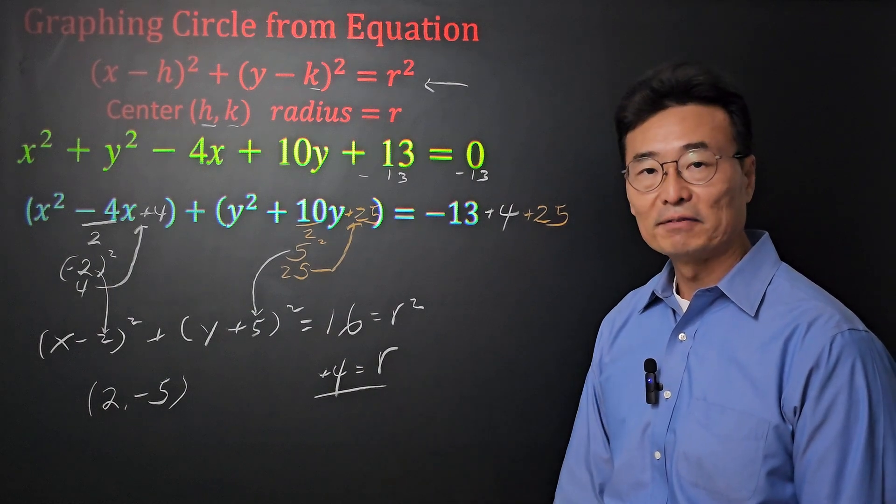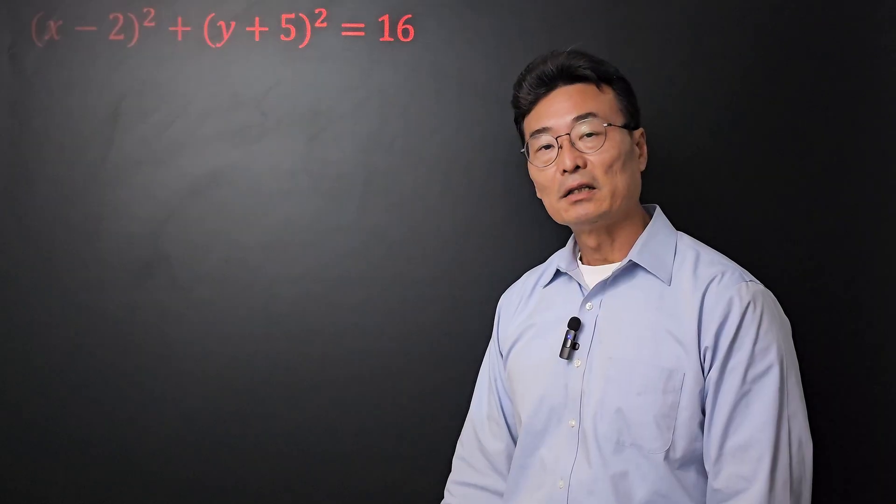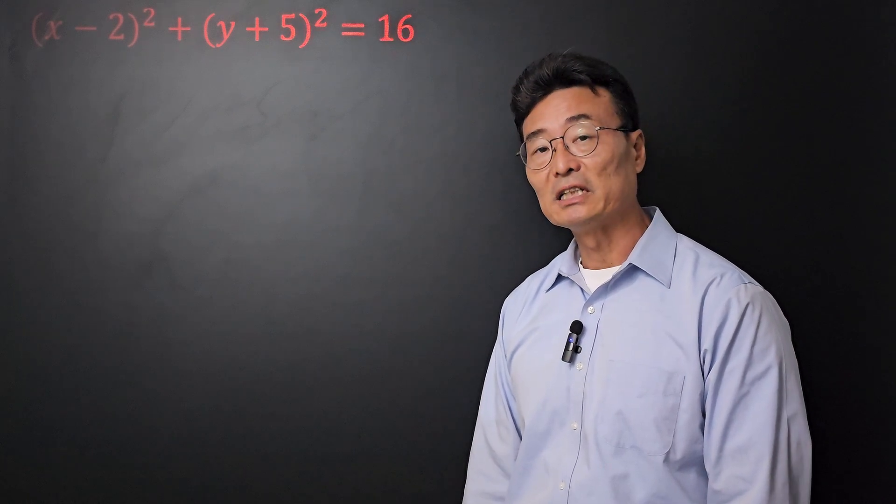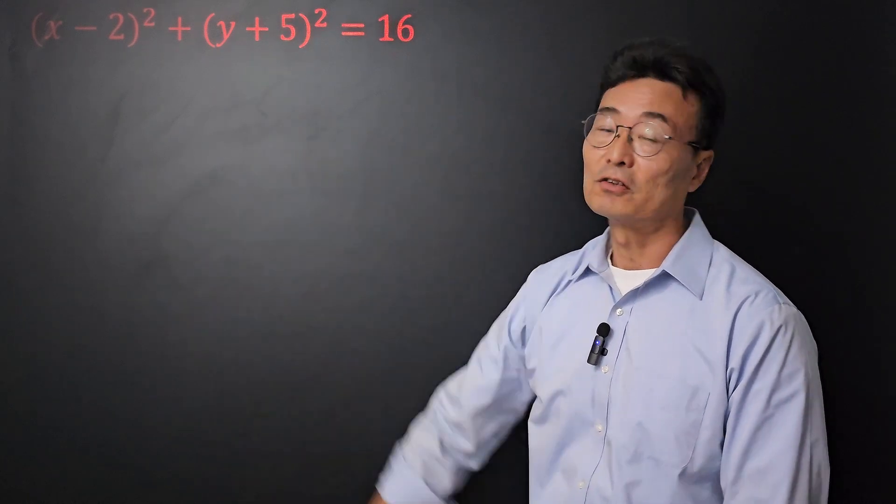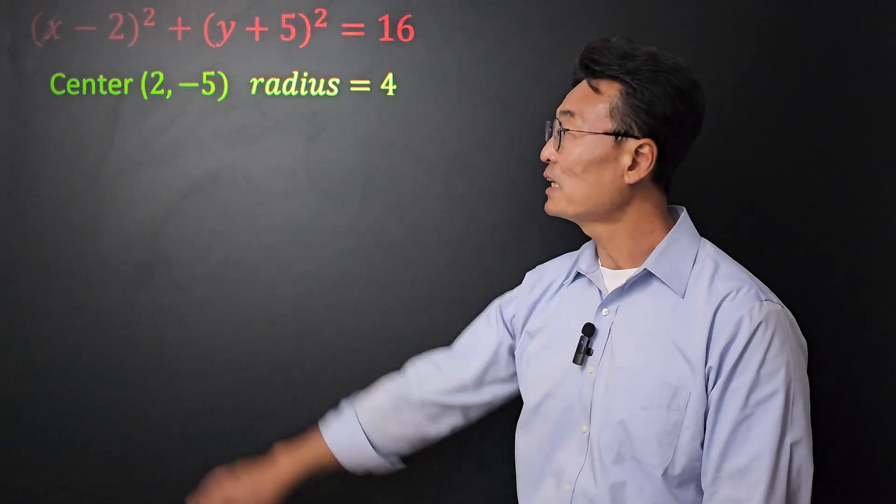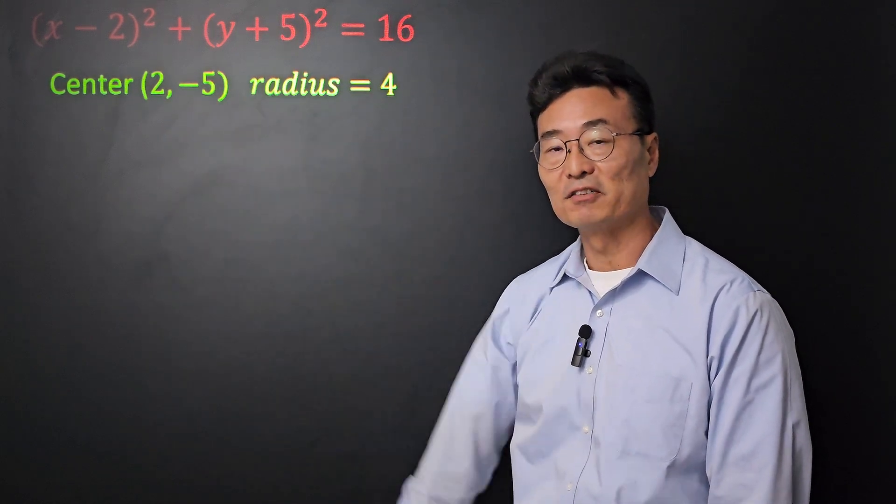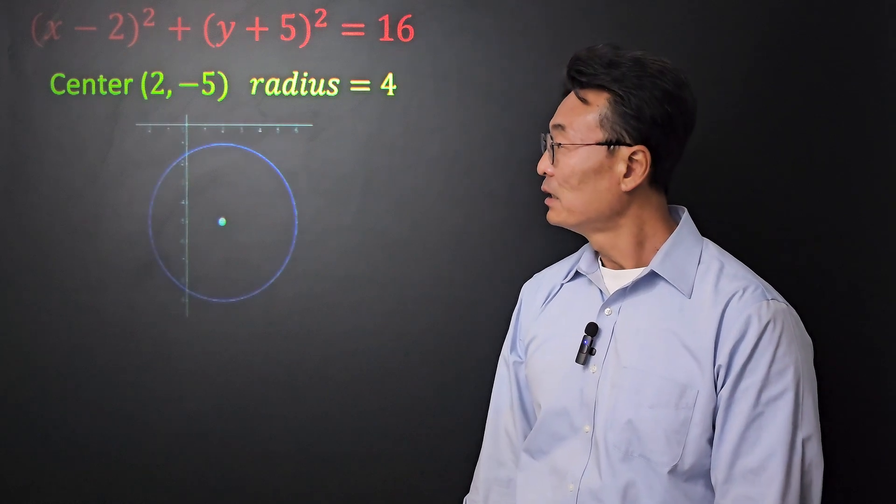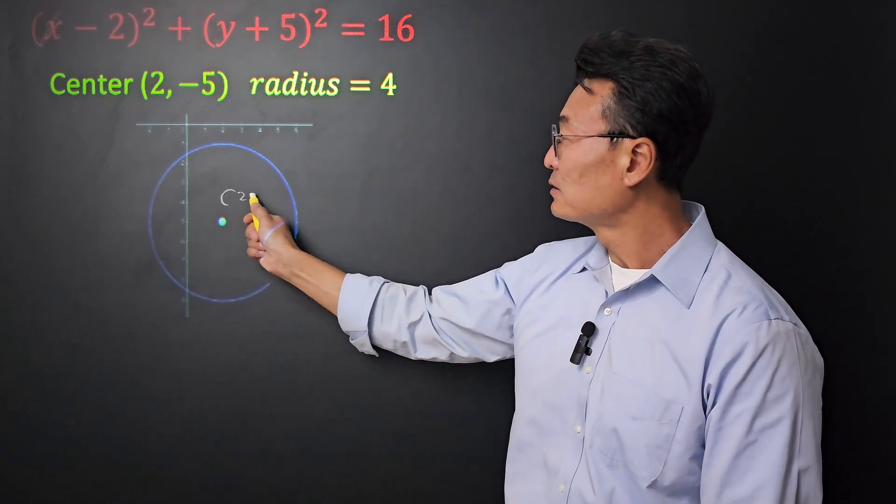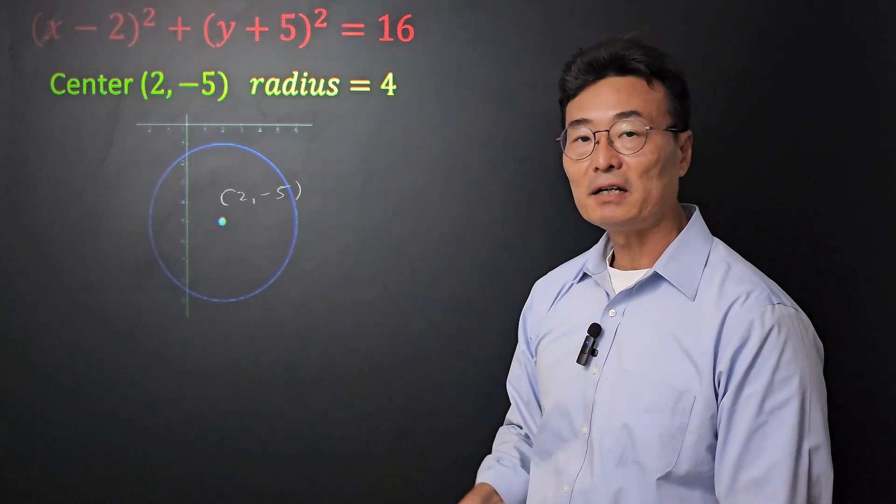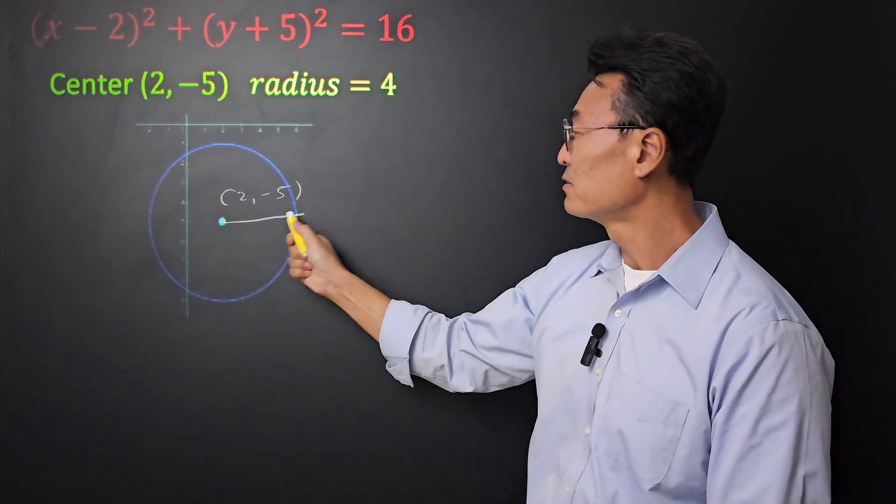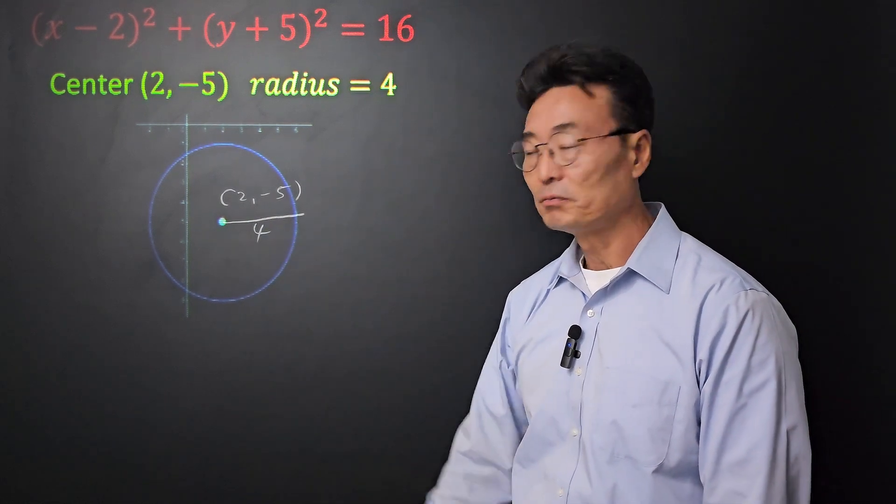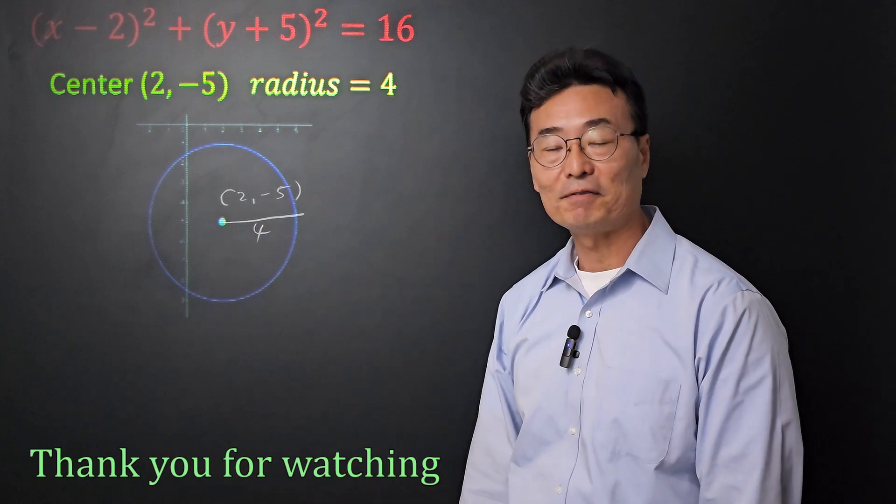Now let's go ahead and graph. Now that we've changed or converted the given equation into a standard circle equation, we're able to find the center and also the radius. Here is the center at 2 comma negative 5 and the radius of 4. There you go, folks. That's the graph of the circle.